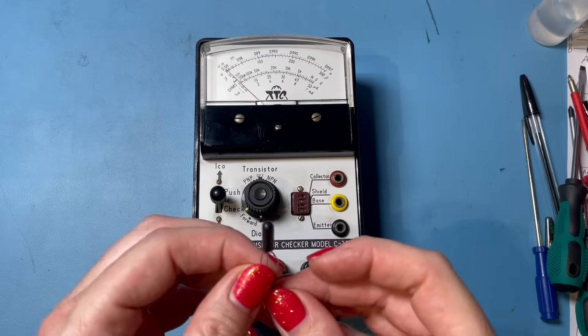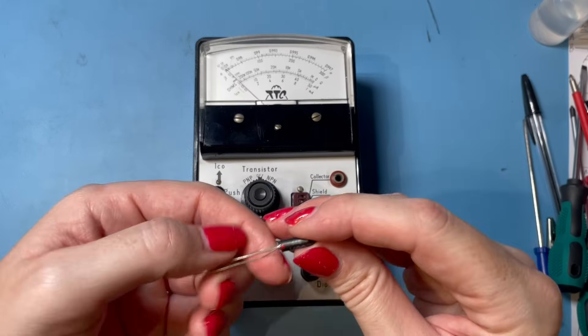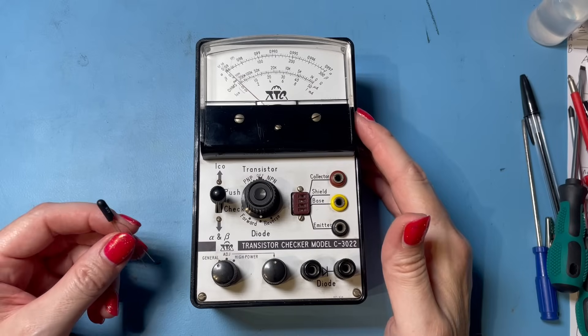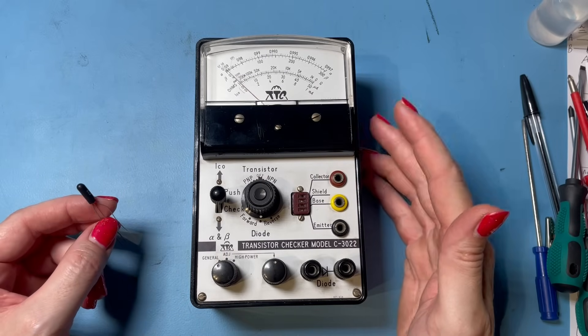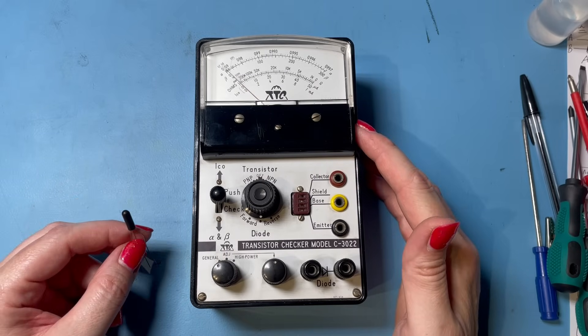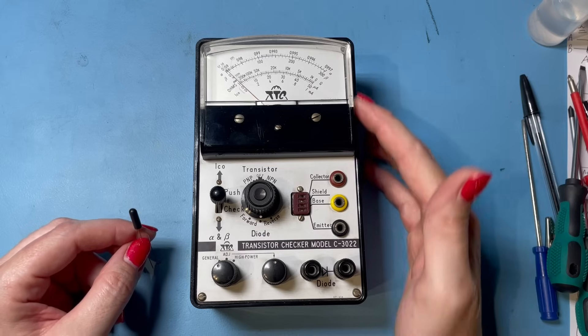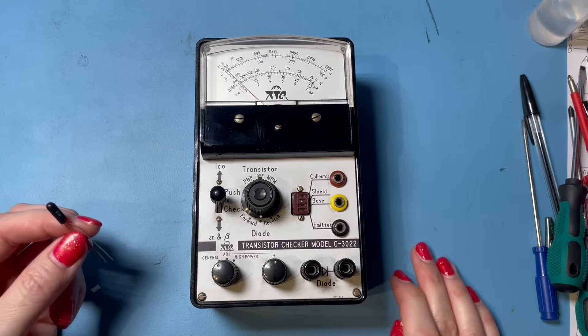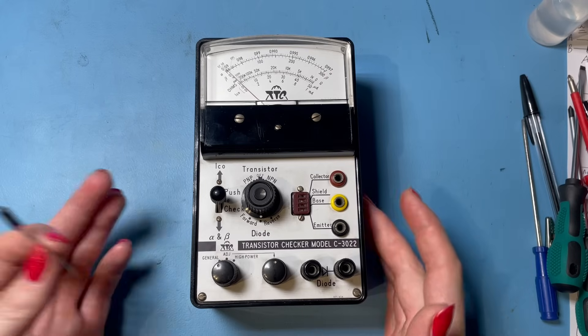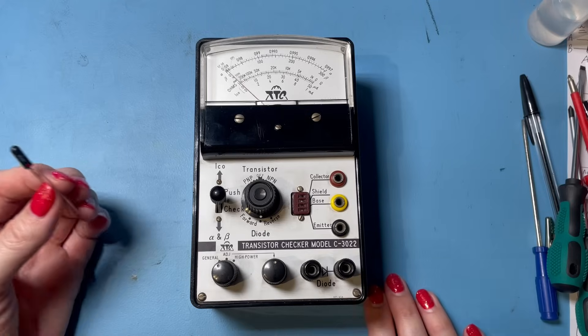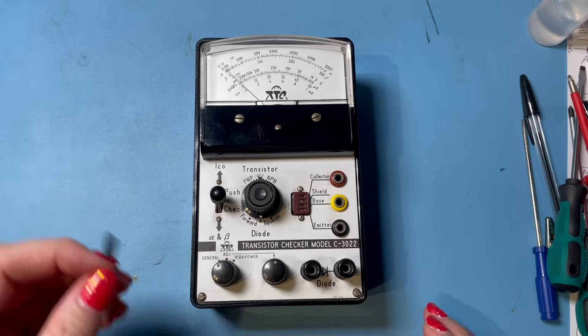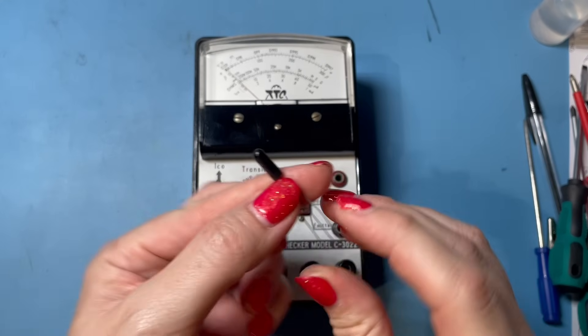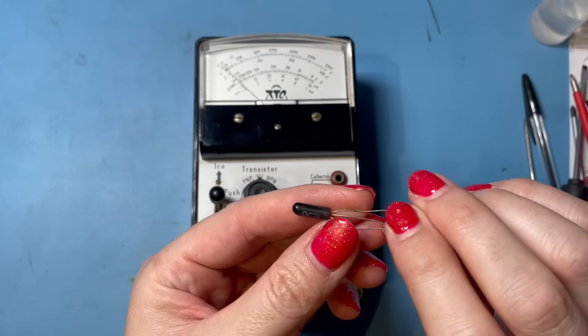All right, why don't we take a look at a germanium transistor. See, this is... actually, having done a bit of research on this, it's older than I think. I did see on the Vintage Radio Forum, somebody mentioned that it might be from 1963. So it's actually 60s rather than 70s. That would make sense, looking at the components inside of it. For some reason, I thought it was 70s. So it's earlier than I thought. Anyway, so we have a germanium transistor here. That's an OC71.